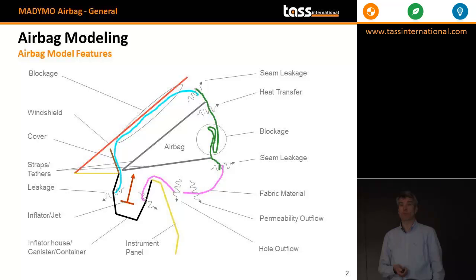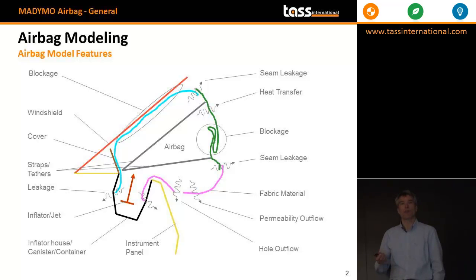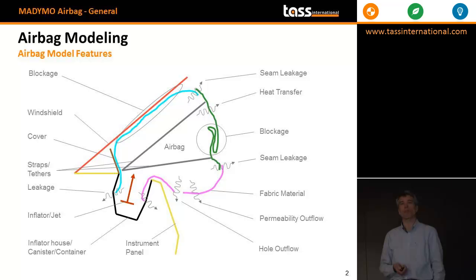Then we have heat transfer. That's typically a phenomenon which is not that prominent. But if you have long deployments, then it might be relevant — it's something like heat loss. Typically after a few seconds, so in roll-over cases, it might be relevant. If it's a passenger airbag or a driver airbag, typically the deployment and the whole crash is across 100 milliseconds, so the effect of heat transfer is not that much.